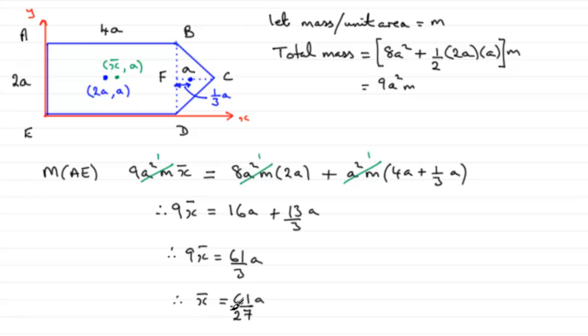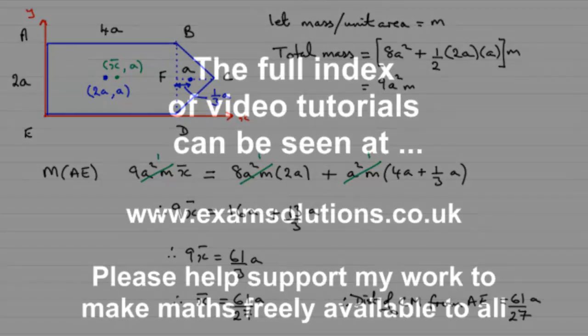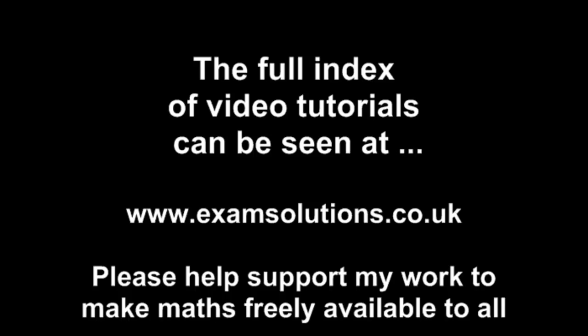There you go. And so that is the distance that the centre of mass is from the edge AE. So we could just summarise, we could say therefore distance of centre of mass from AE equals 61A over 27. Thank you.